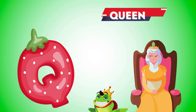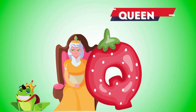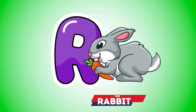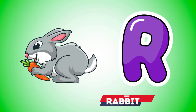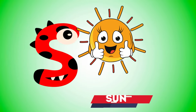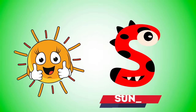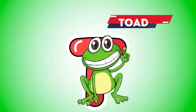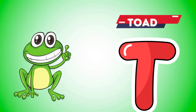Q is for queen, qu-qu-queen. R is for rabbit, r-r-rabbit. S is for sun, s-s-sun. T is for toad, t-t-toad.